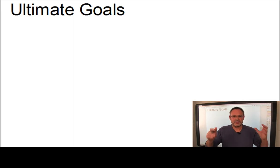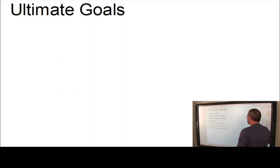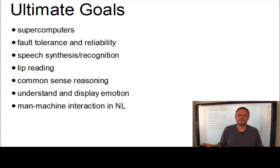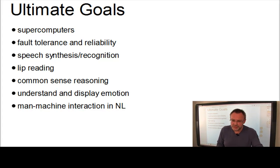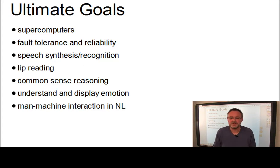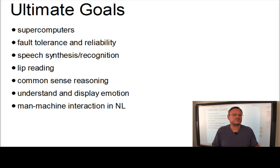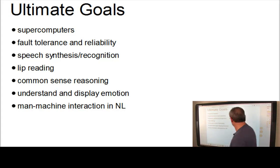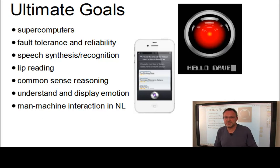Okay, that may suffice. HAL combines various technologies which already exist today, but their level of sophistication is of course far below that displayed by HAL. First of all, HAL is a supercomputer. HAL is equipped with fault tolerance and reliability. HAL is capable of doing speech synthesis and speech recognition. And HAL, as you may have noted, can perform lip reading. HAL uses common sense reasoning and HAL has the ability to understand and display emotion. So HAL can interact with humans in natural language. Today's speech recognition systems have already reached a high degree of sophistication and we are not too far away from HAL anymore.